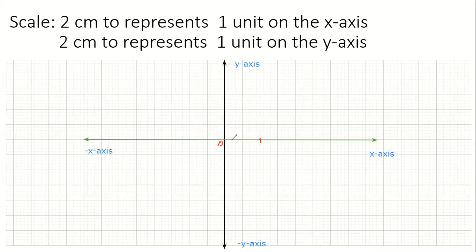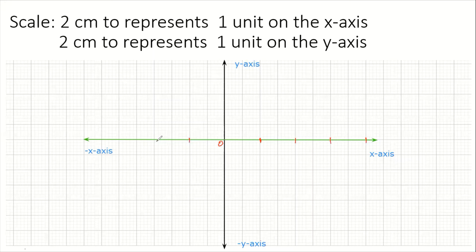The distance from the origin to this stroke is two centimeters. Count off another 10 small boxes — that's another two centimeters. Continue for another two centimeters and another two centimeters. Each stroke is equal distance apart — measure between any two strokes and you'll get two centimeters. Do the same on the negative x-axis, counting off 10 small boxes each time.